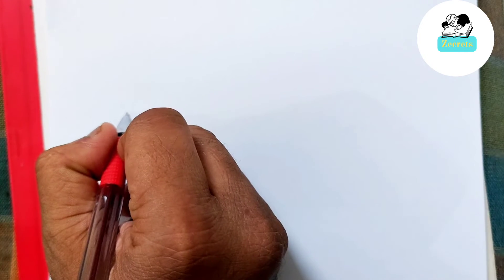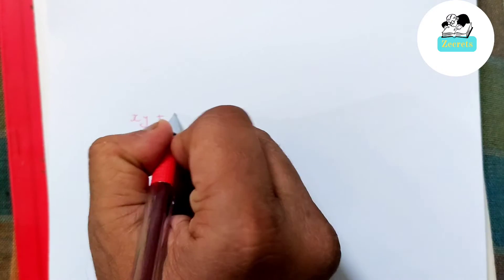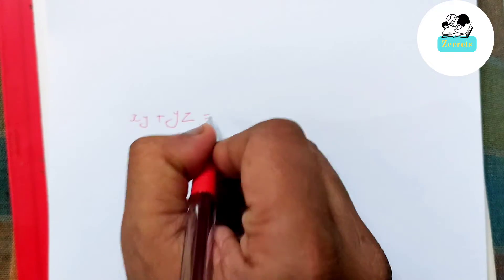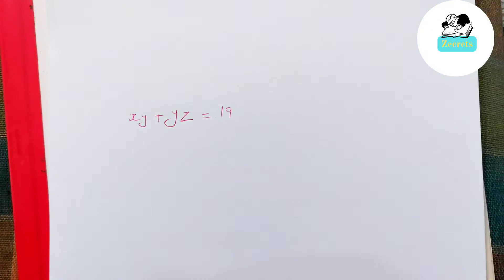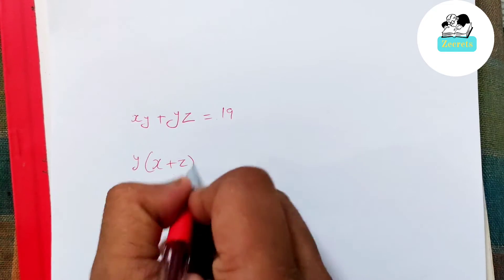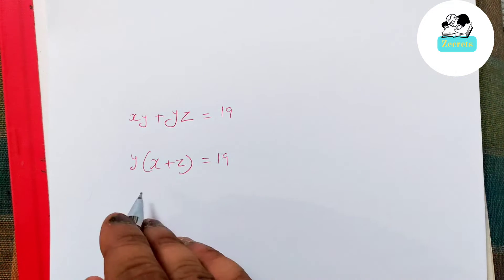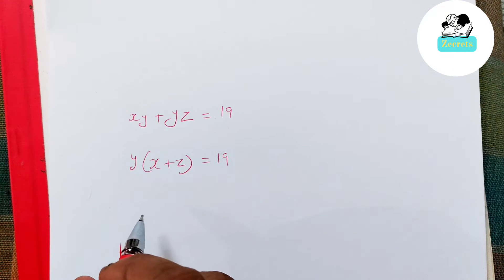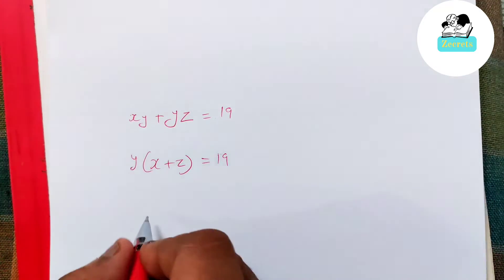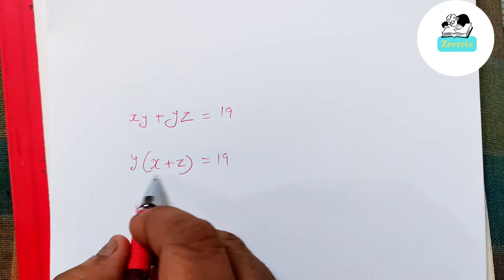First, it was given that x times y plus y times z equals 19. If I take y common, I get y times (x plus z) equals 19. It is given that x, y, z all three are natural numbers. So 19 is a prime number; the factors are going to be only 1 and 19.